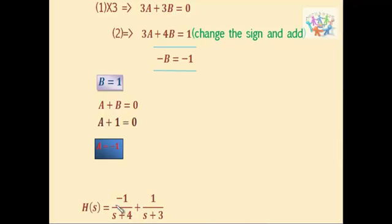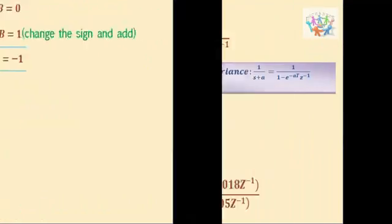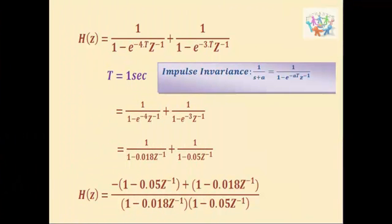So we have to find separately for this term and for this term. By applying this equation, we will get 1 by 1 minus e to the power minus 4T into z inverse plus 1 by 1 minus e to the power minus 3T into z inverse.